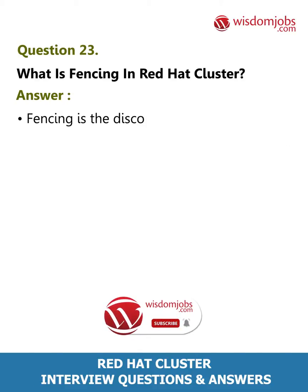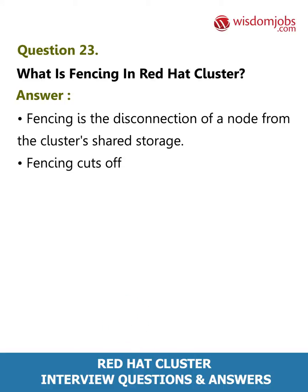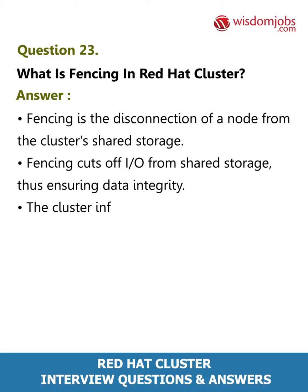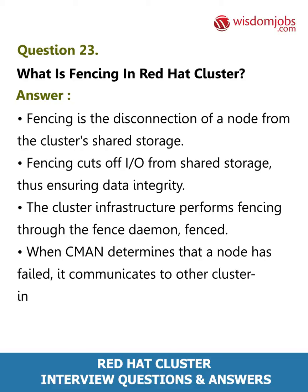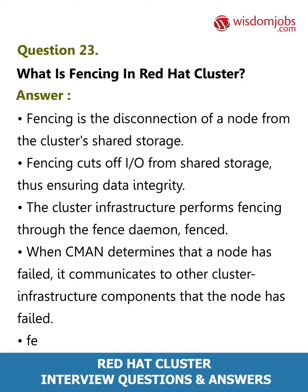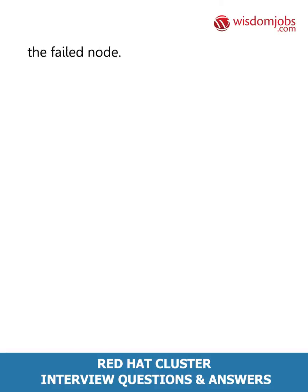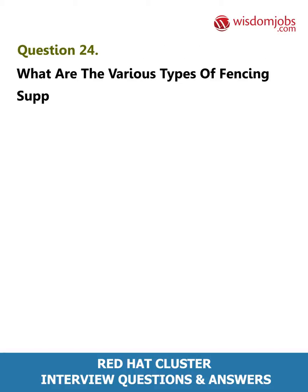Question 23: What is fencing in Red Hat Cluster? Answer: Fencing is the disconnection of a node from the cluster's shared storage. Fencing cuts off I/O from shared storage, thus ensuring data integrity. The cluster infrastructure performs fencing through the fence daemon (fenced). When CMAN determines that a node has failed, it communicates to other cluster infrastructure components that the node has failed, and fenced then fences the failed node.